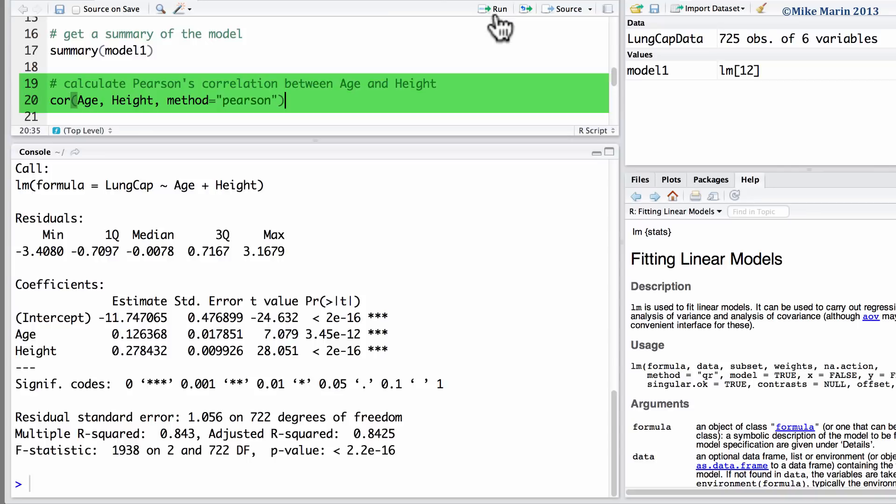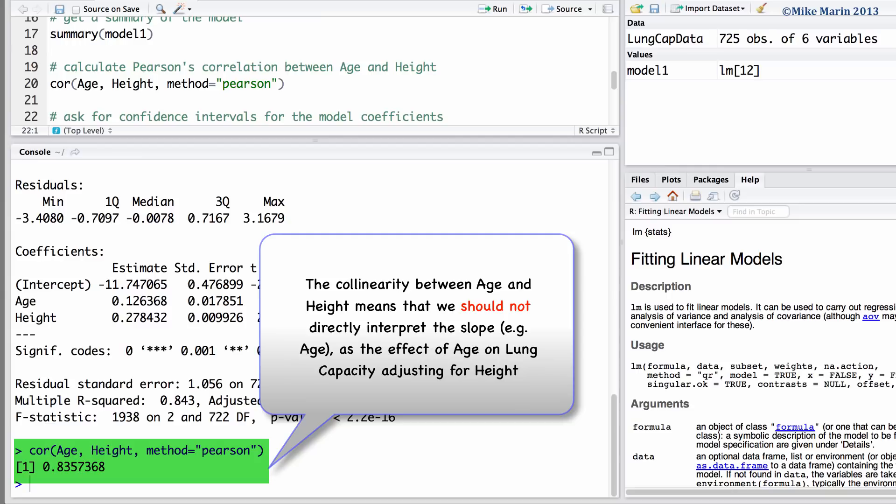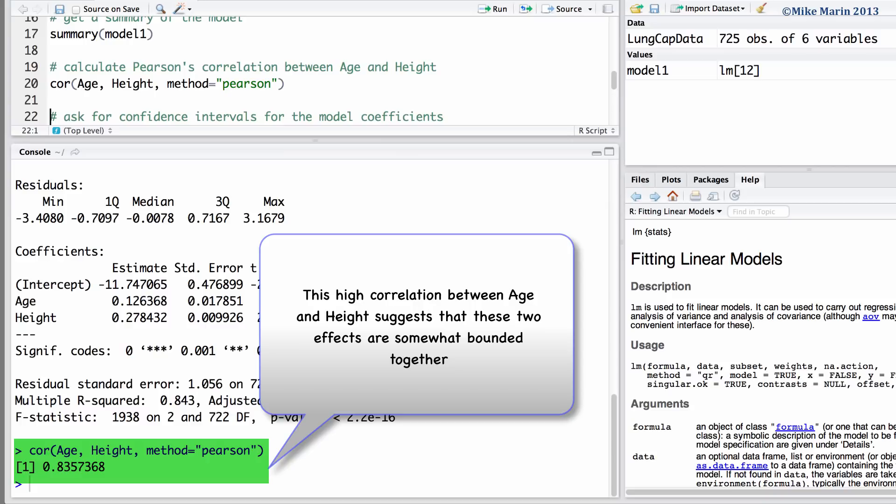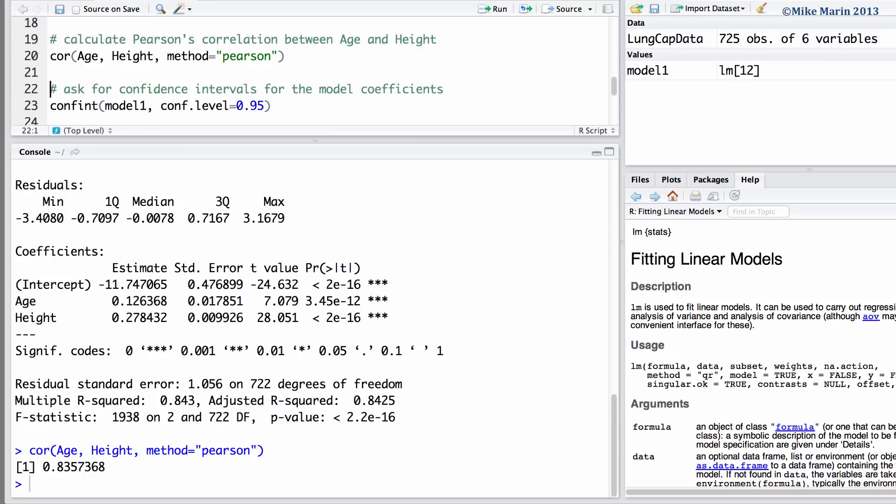Now, let's go ahead and calculate Pearson's correlation between age and height. We can see that age and height are very highly correlated. The co-linearity between age and height means that we should not directly interpret the slopes, say the slope of age, as the effect of age on lung capacity, adjusting for height. This high correlation between age and height suggests that these two effects are somewhat bounded together. Dealing with co-linearity is a topic we'll discuss in later videos.